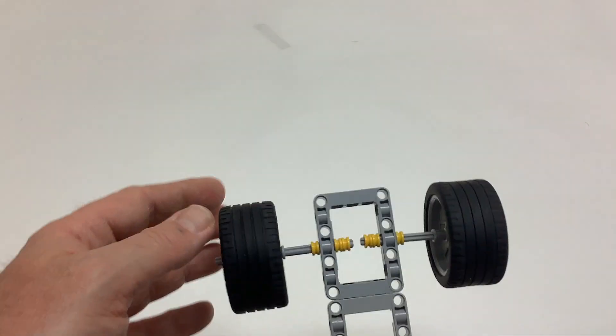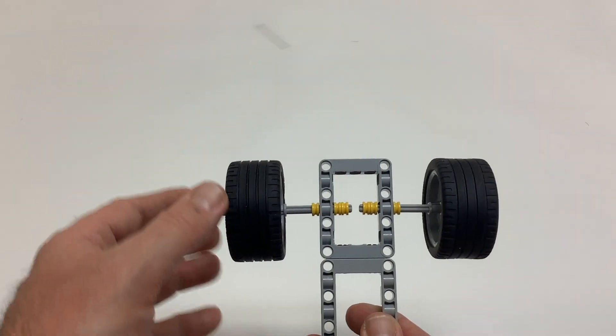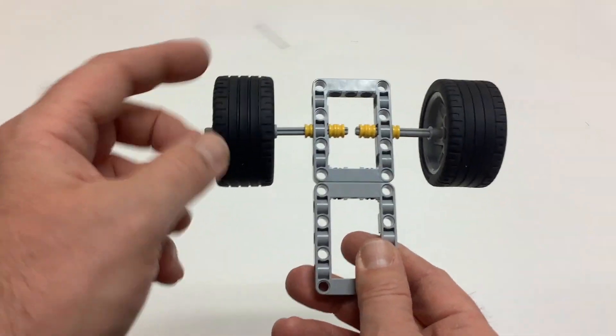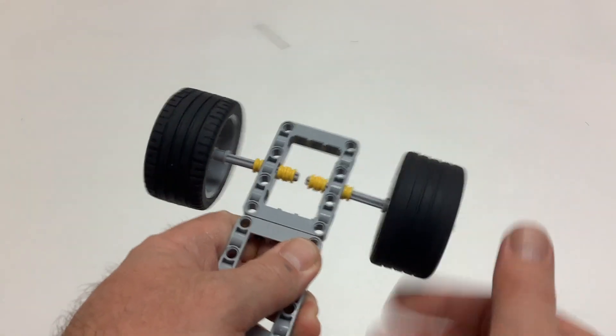This is actually how most front wheel drive vehicles have their back wheels where, like I said, they just totally spin freely.